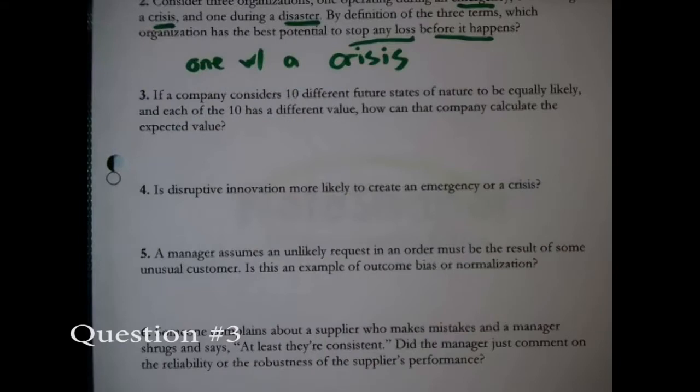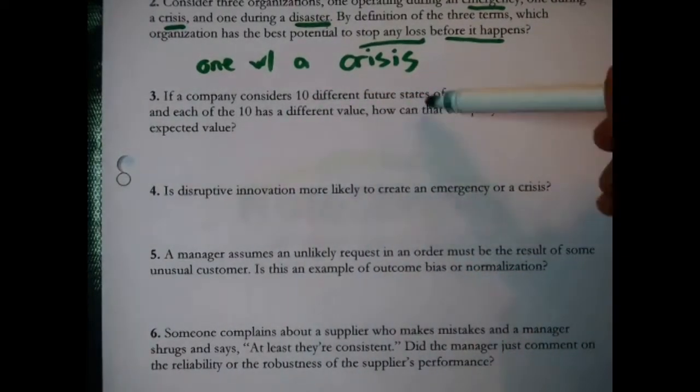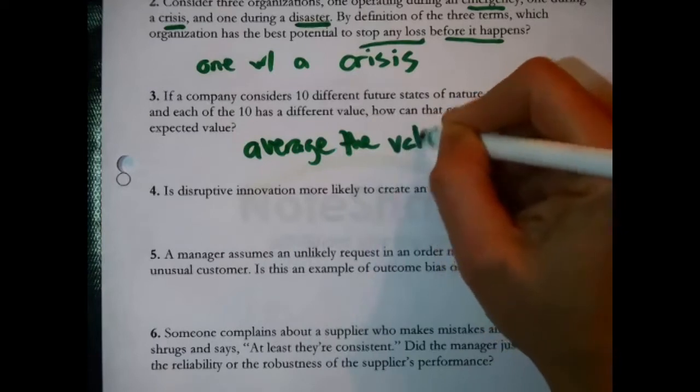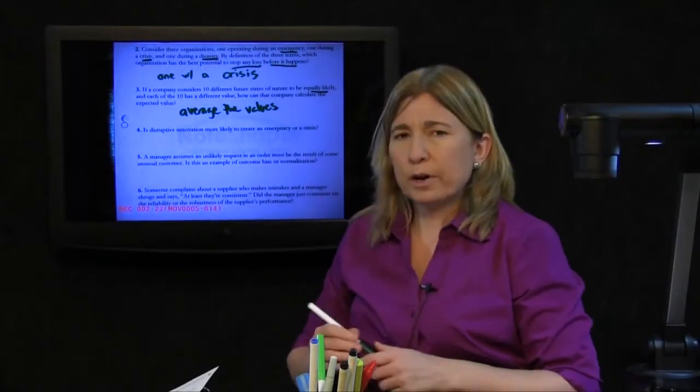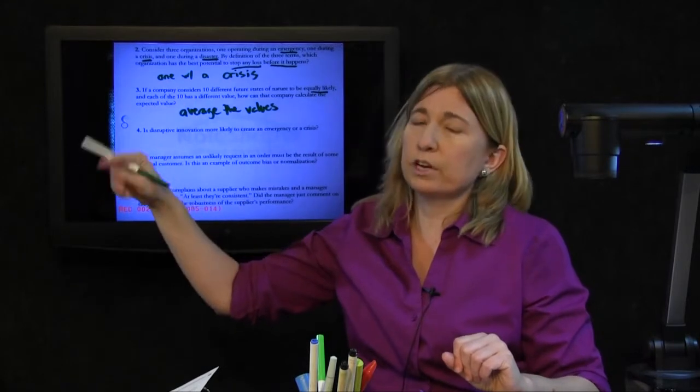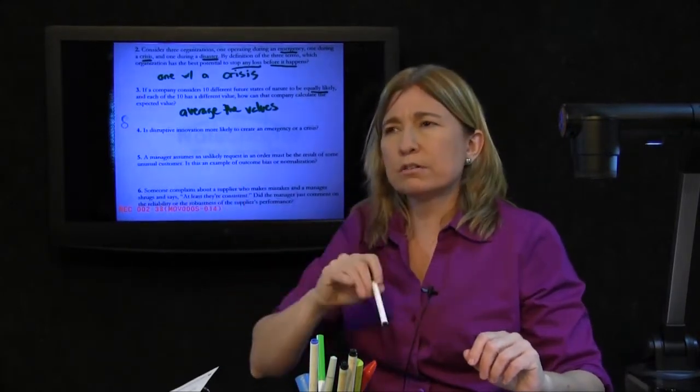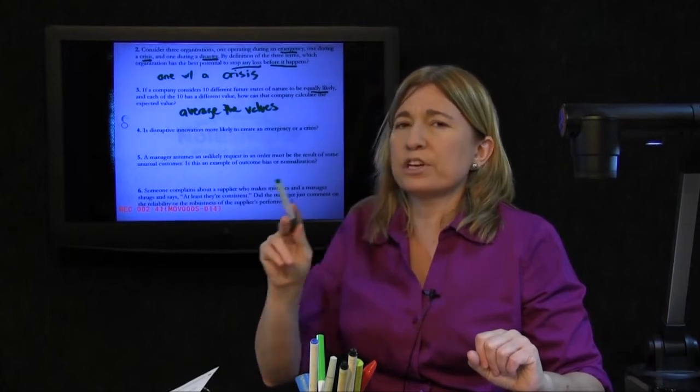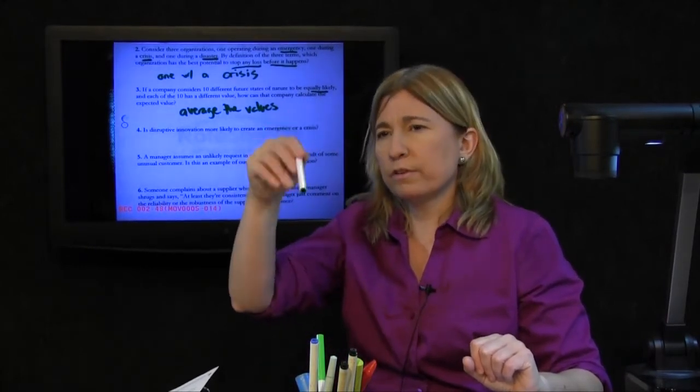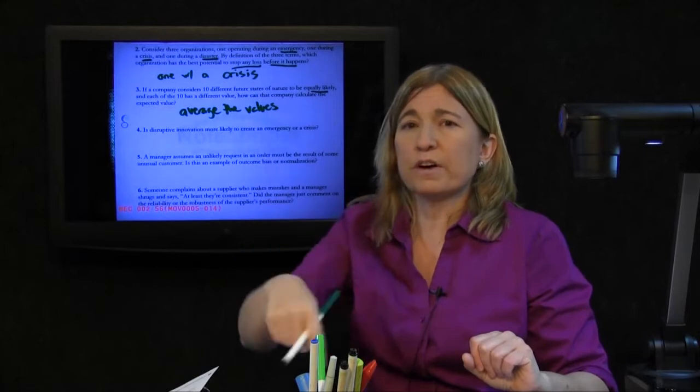If a company considers ten different future states of nature to be equally likely, and each of the ten has a different value, how can the company calculate the expected value? The easiest way to do that is average the values. Because an expected value, you take the value of a future state of nature and multiply it times the probability, and then you add it to the value of another future state of nature multiplied by its probability. What this question is saying is that there's ten future states of nature, considering them equally likely means they each have the same probability, which would have to be one-tenth or point one. That is mathematically equivalent to just taking those values and averaging them.